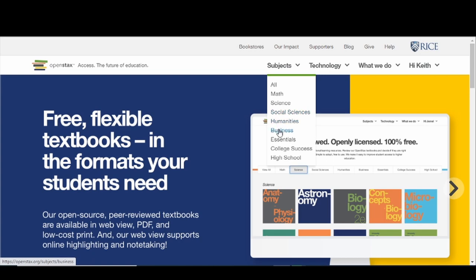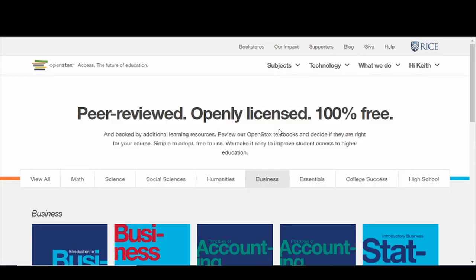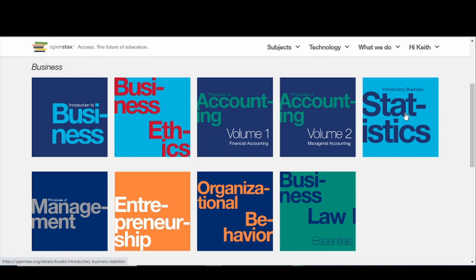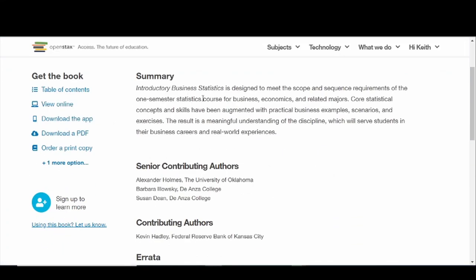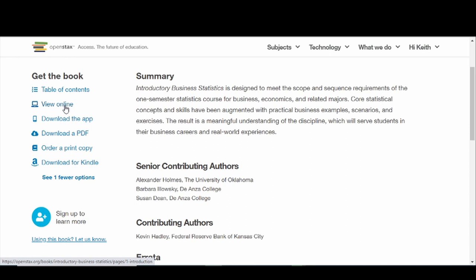What we want to do to navigate to our actual textbook is we're going to jump to Subjects and Business. From here, we are looking for Introductory Business Statistics. So we'll click that and open that guy up. From here, here's our main summary page. You could download the PDF. If you want to use it on your smart device, you can download the app. You can also view it online. For myself, I'm just going to view it online. I'll also show you there are some other options. You could, if you have a Kindle, view it on the Kindle, or you could order a print copy from them as well. I'm not sure what that delivery time looks like, however.